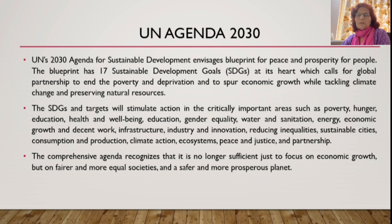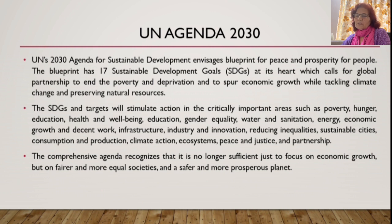Now we discuss the UN Agenda 2030. The UN's 2030 Agenda for Sustainable Development envisions blueprints for peace and prosperity of people. The blueprint has 17 Sustainable Development Goals at its heart, calling for global partnership to end poverty and deprivation, spur economic growth, tackle climate change, and preserve natural resources. The SDGs will stimulate action in critically important areas including poverty, hunger, education, health and well-being, gender equality, water and sanitation, energy, economic growth and decent work, infrastructure, industry and innovation, reducing inequalities, sustainable cities, consumption and production, climate action, ecosystems, peace and justice, and partnership.